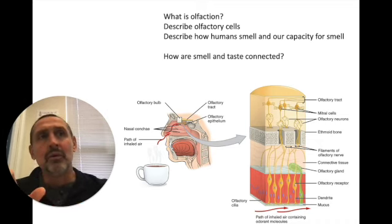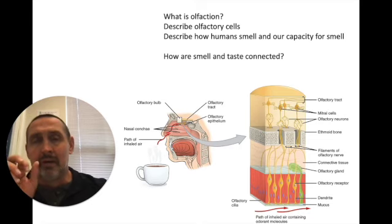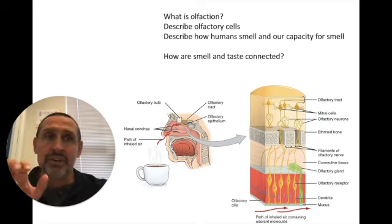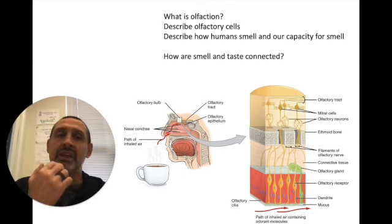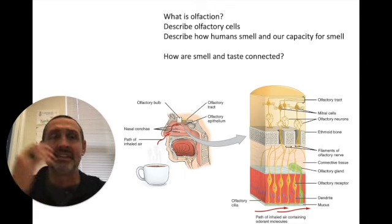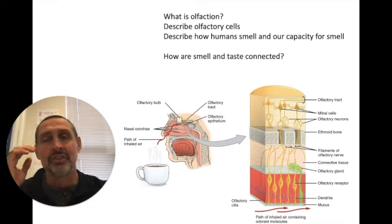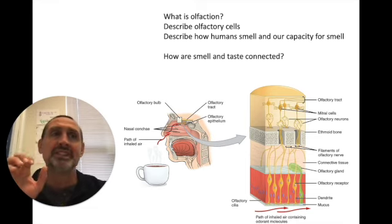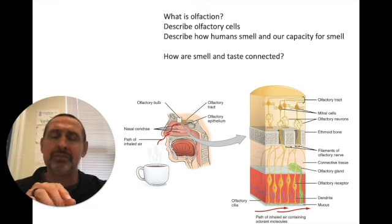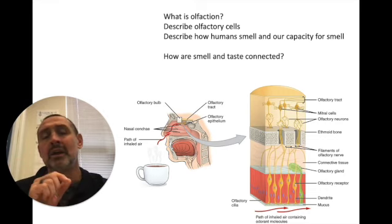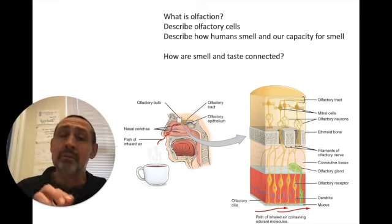In fact, humans can outsmell dogs in certain areas, but not in old things. But basically, these airborne molecules called odorants, that's where we get the word odor, these odorants are stimulating these dendrites in your nasal cavity, sending that information to your olfactory bulb, which is located in your brain. And it's part of the limbic system. The limbic system has a lot to do with memory, which is why smells can often trigger memories.